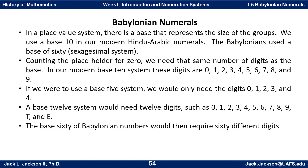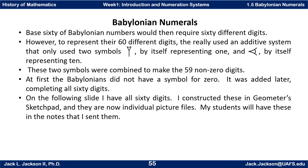The base-60 Babylonian numbers would then require 60 different digits. That's a lot of digits, but it turns out they were able to represent this with just two symbols — a symbol that looks like this to represent 1, and a symbol like this to represent 10. For the numbers between 1 and 59, they combined these symbols in an additive fashion, somewhat like Egyptian or Roman numerals, to create the different digits from 1 to 59. Once they reached a 60th item, they would regroup, making 1 in the next digit over. At first the Babylonians did not have a symbol for 0; it was added later, and when they did add it as a placeholder, that completed all 60 digits.